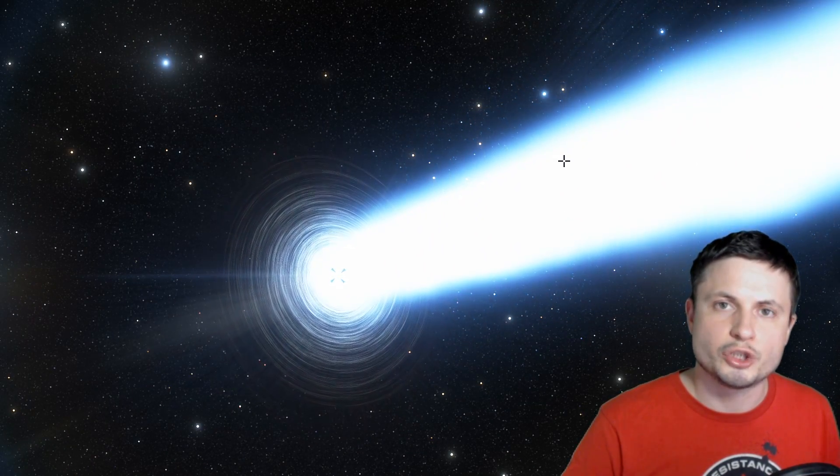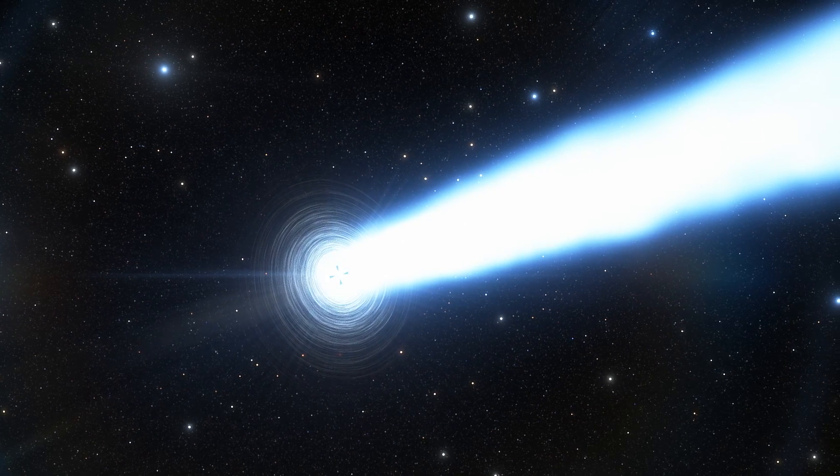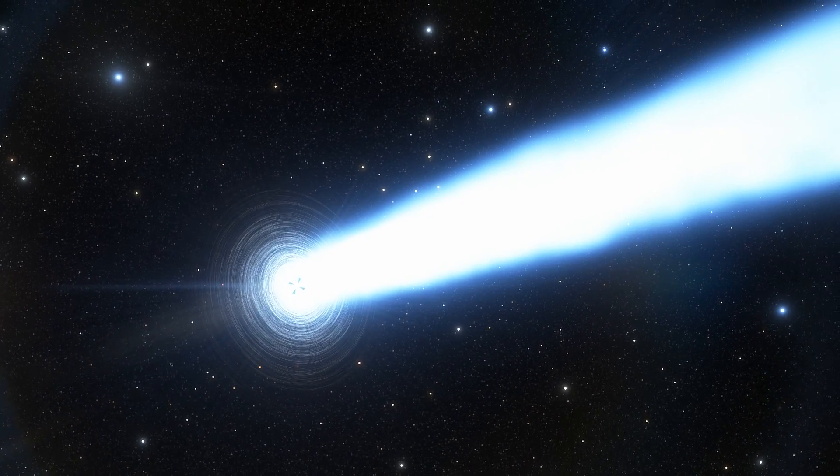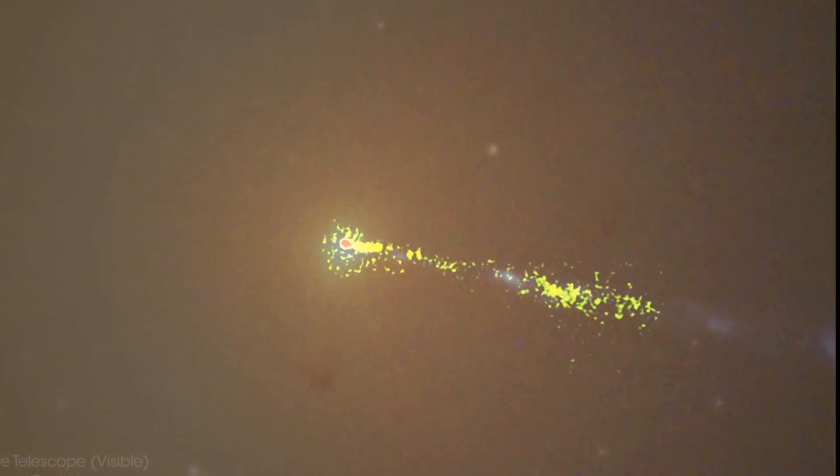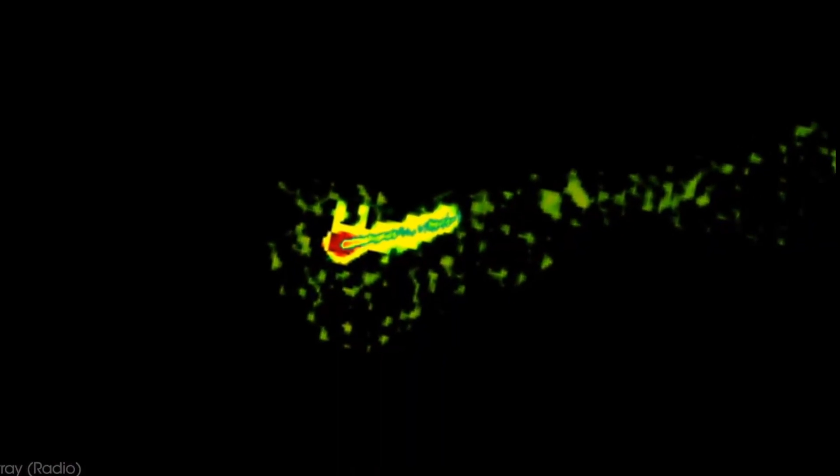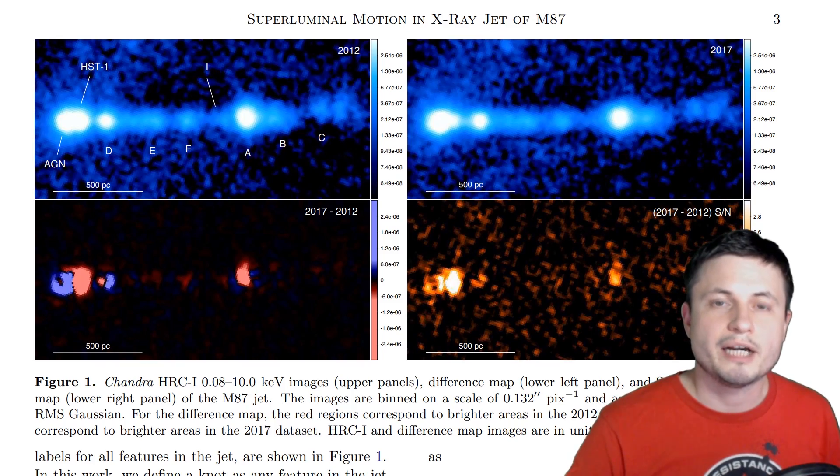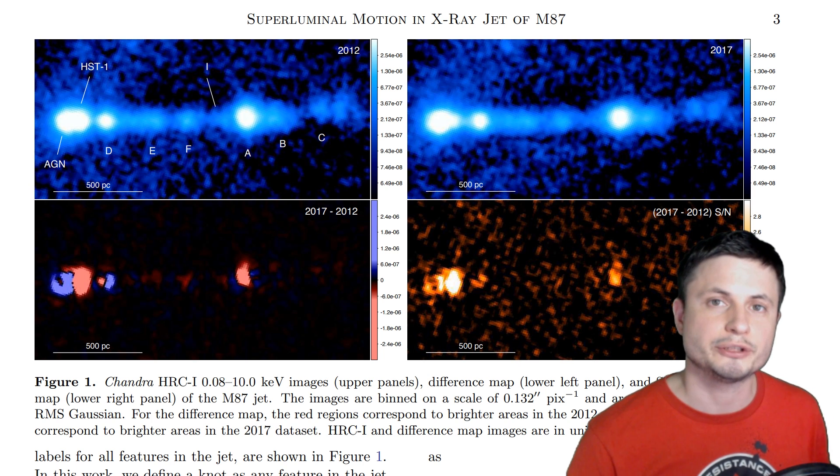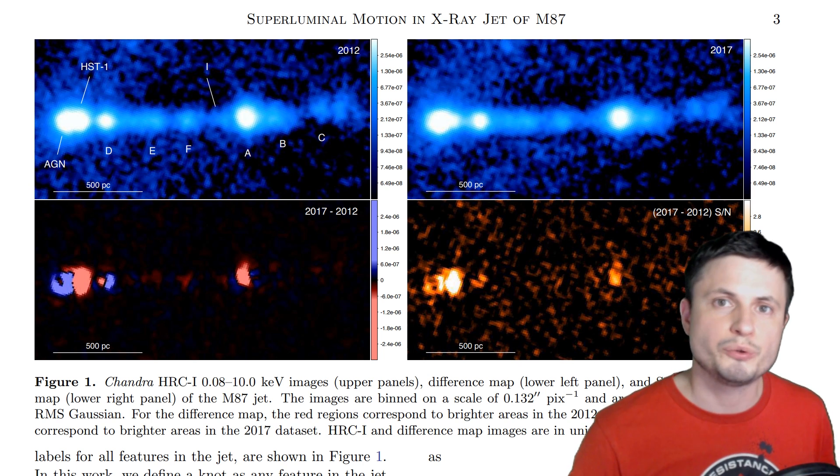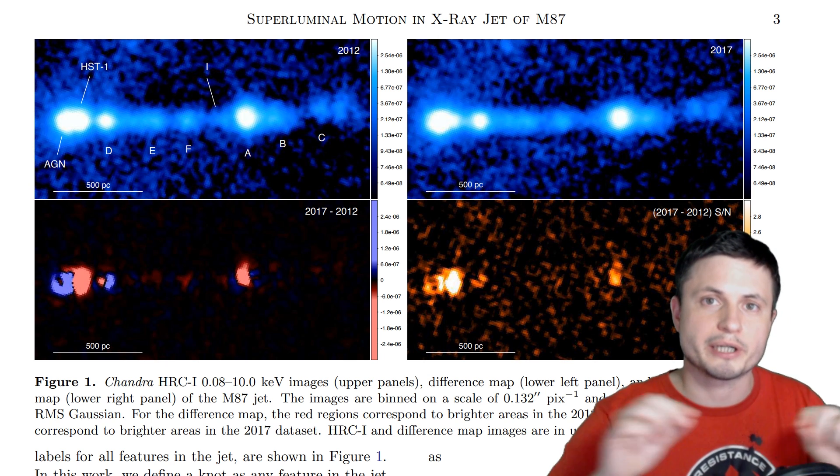However, despite our simulations showing them as somewhat linear and continuous, in reality the jets are much more irregular and are made up of clumps and different knots that can easily be seen in different images created throughout the years. This here was created in radio waves, we also have very similar observations in visual light, and now the scientists have also created observations in the X-ray using the Chandra Observatory. And this allowed us to very accurately calculate the superluminal velocity, allowing us to estimate the actual speed of the particles inside the jet.